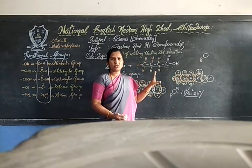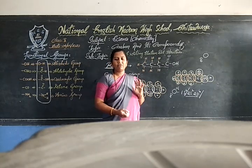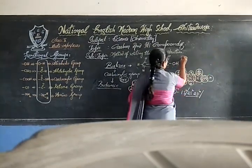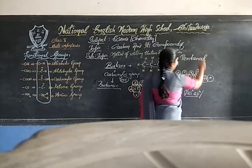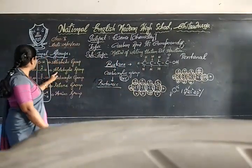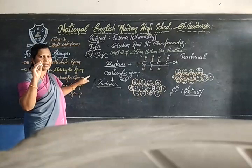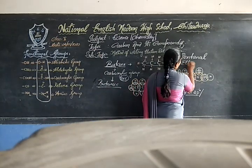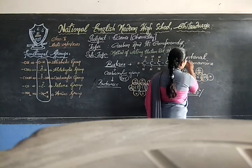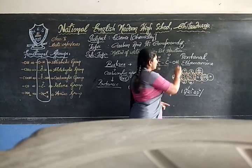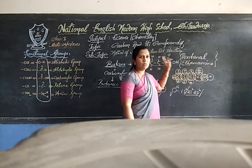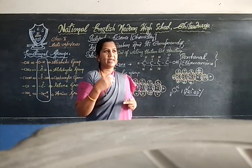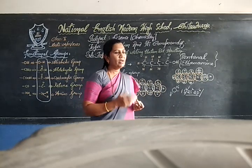I will give you an assignment: try to write down the electron dot structure for pentanol and ethanamide. Pentanol has five carbons with an alcohol functional group. Ethanamide has two carbons with an amide functional group. Try to write the electron dot structure for these two compounds. Hope you all understood and enjoyed. In the next class, we shall meet with more information. Have a good day. Thank you.